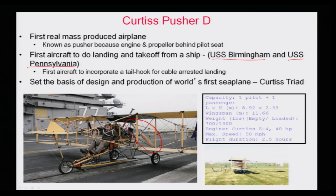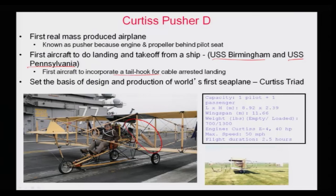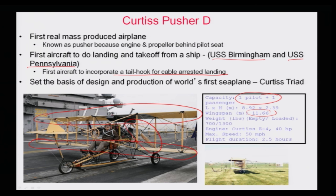You should also know that the concept of the tail hook arrangement — a hook at the back of the aircraft that connects to a landing wire to arrest the landing — was first developed on this aircraft. That same technology is still used today for naval ship landings. This aircraft also became the forefather of the world's first seaplane, the Curtis Triad. Important features include seating for a pilot plus one passenger, and a wingspan of 11.66 meters.